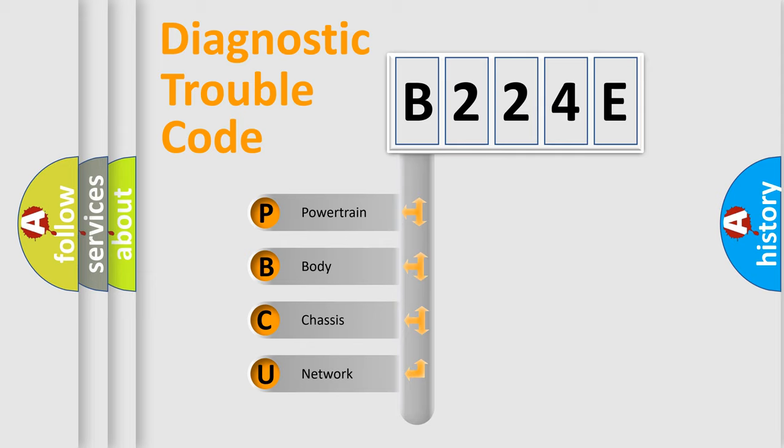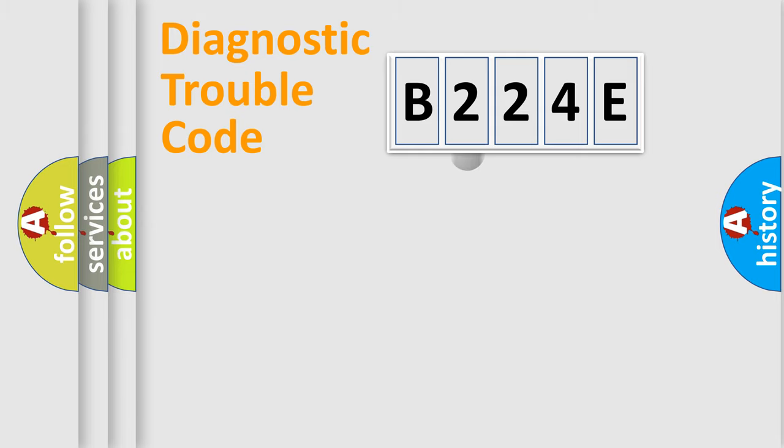We divide the electric system of an automobile into four basic units: Powertrain, Body, Chassis, and Network. This distribution is defined in the first character code.